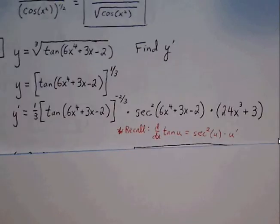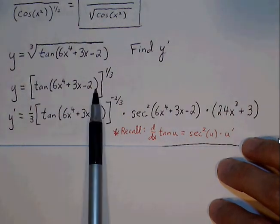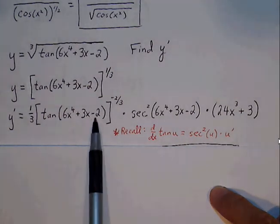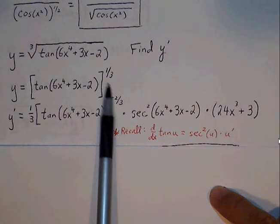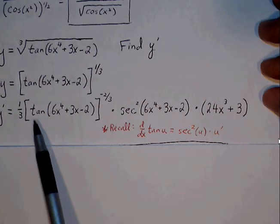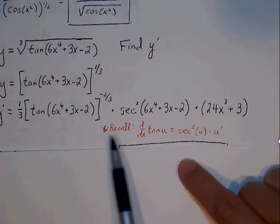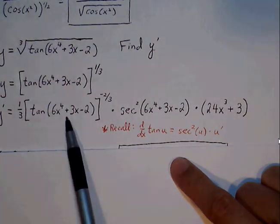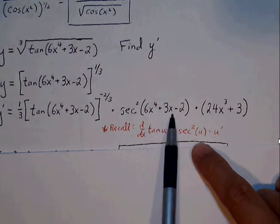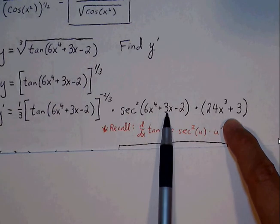We go through chain rule. We ignore everything inside the bracket and think of it as one big variable raised to the 1 third. Going through power rule, bring down the 1 third, keep our big bracket, subtract 1 from the exponent — so 1 third minus 1 is negative 2 thirds. Now we move to the next function in, which is tangent. The derivative of tangent is secant squared u times u prime. So tangent of u becomes secant squared of u times u prime. The derivative of 6x to the 4th plus 3x minus 2 gives us 24x cubed plus 3, since negative 2 is a constant and goes to 0.